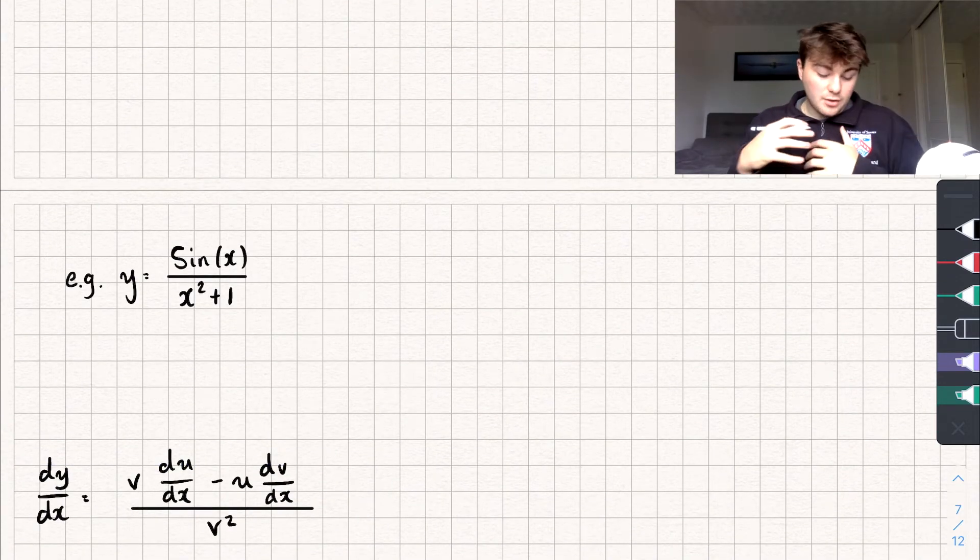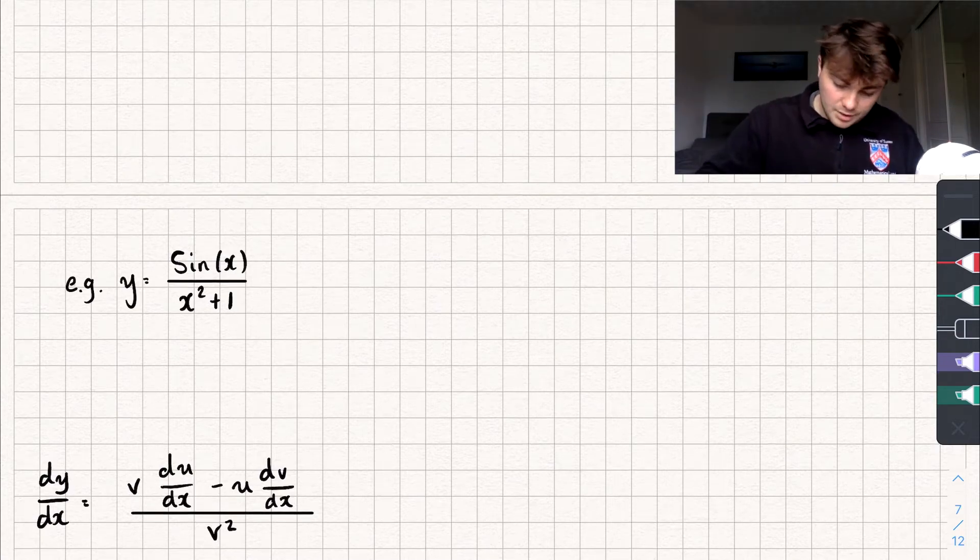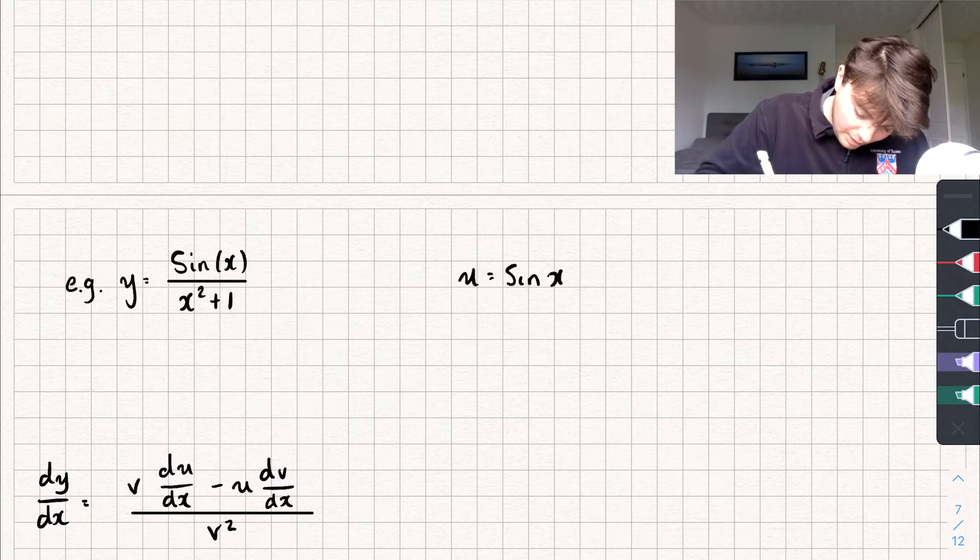So we've got to find the derivative of y equals sine x over x squared plus 1. And so for this example, our u is going to be sine of x and our v is going to be x squared plus 1.